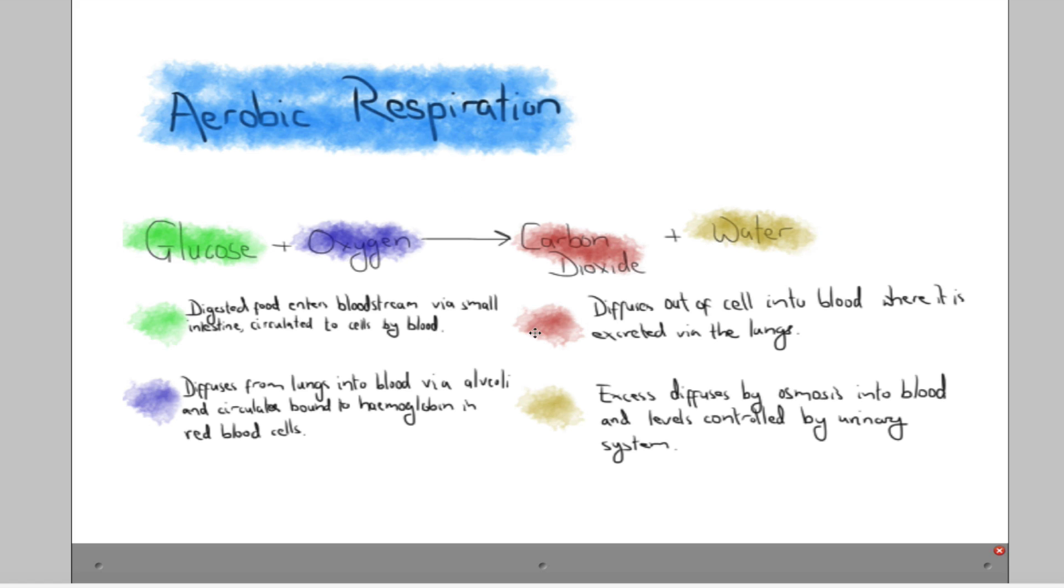The products of respiration - carbon dioxide will diffuse out of the cells into the blood, which is eventually excreted via the lungs. It's in a higher concentration in the blood than inside the lungs, so it gets excreted by diffusion. The water is going to be used wherever possible within the cell, between cells, in the plasma of the blood. But if there is excess, that's excreted out, controlled by your kidneys within the urinary system.